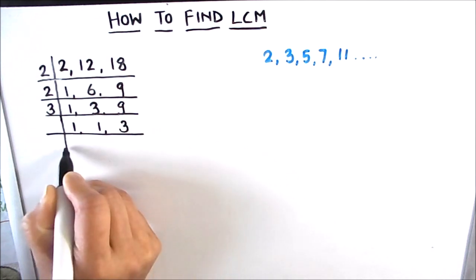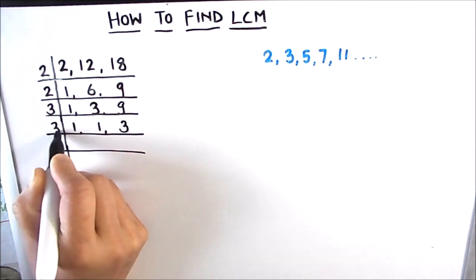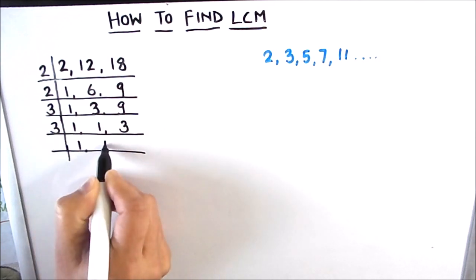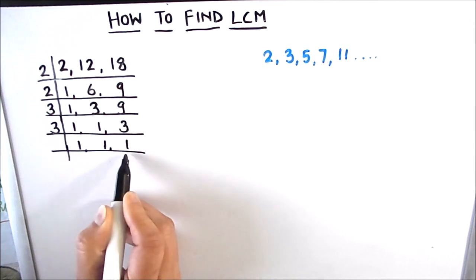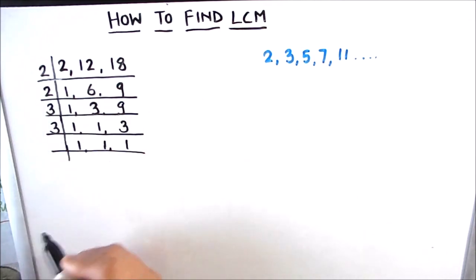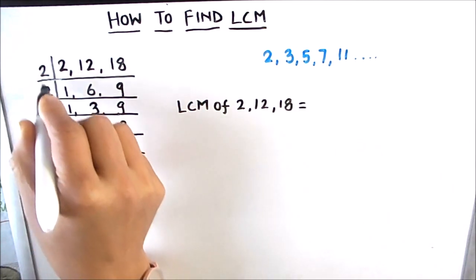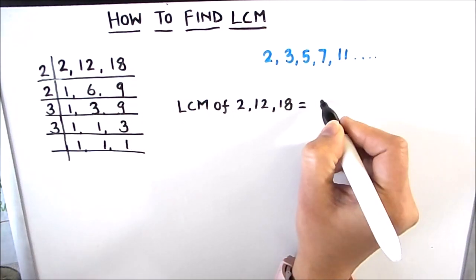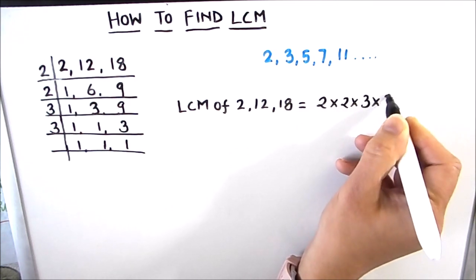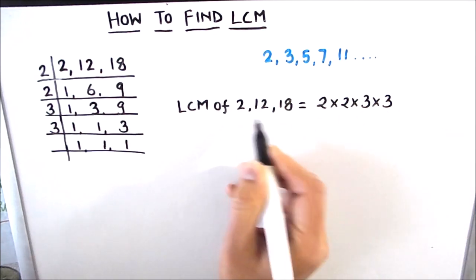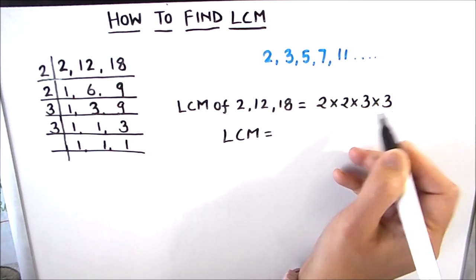Using 3: 3 × 1 = 3 and 3 × 3 = 9. Next we divide again by 3: 3 × 1 = 3 and 3 × 1 = 3. Now all quotients are 1, meaning all numbers are fully divided. The LCM of the three numbers is the product of all the divisors on the left-hand side of the ladder: 2 × 2 × 3 × 3.